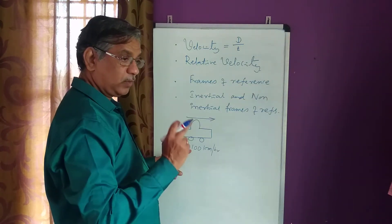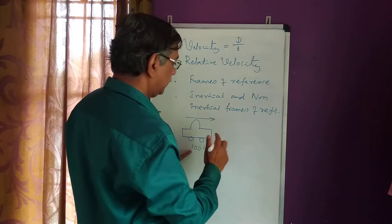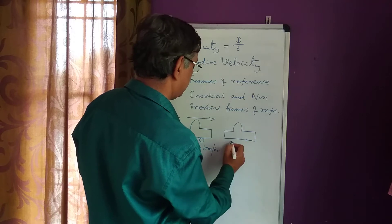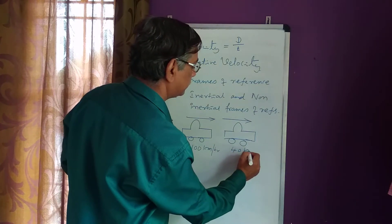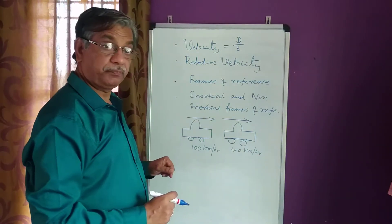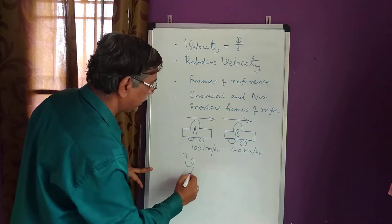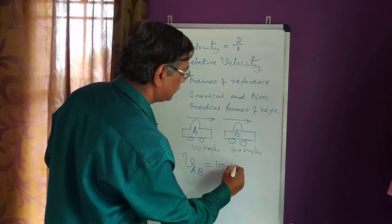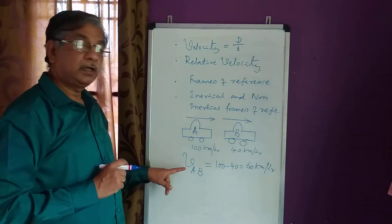So this means it is moving 100 kilometers in one hour. Let us say there is another vehicle which is moving in this direction with 40 kilometers per hour. Let us say this is vehicle A and this is vehicle B. The relative velocity of A with respect to B is equal to 100 minus 40, that is 60 kilometers per hour. This is relative velocity.